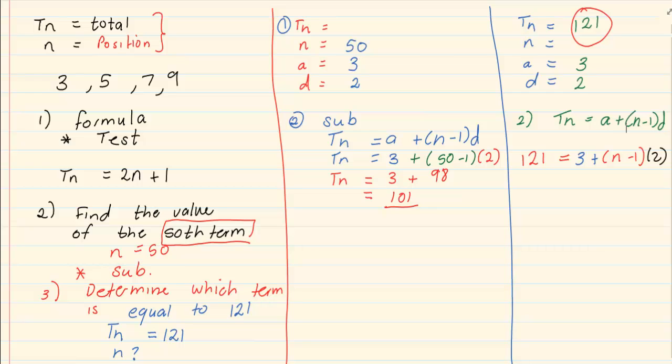Now after this, it's simply a case of solving for an unknown. So we have 121 minus 3 is equal to 2N minus 2. 121 minus 3 plus 2 is equal to 2N. 120 is equal to 2N. N is equal to 60.